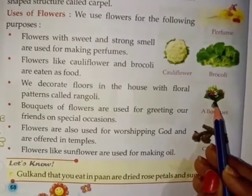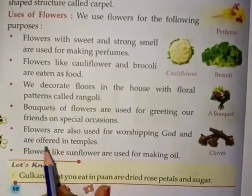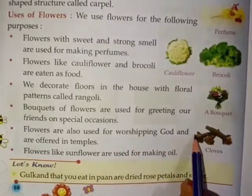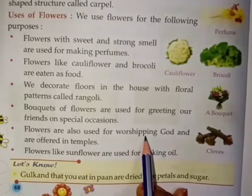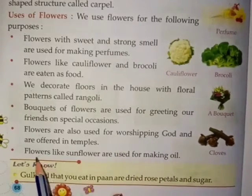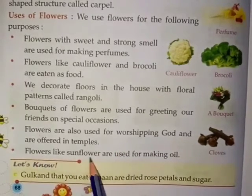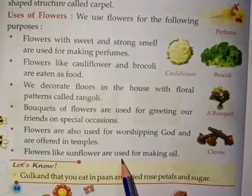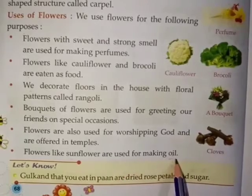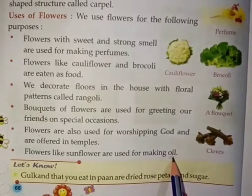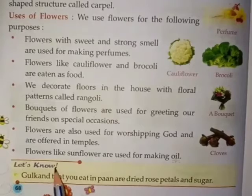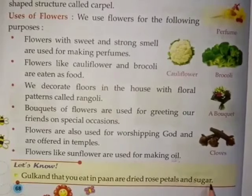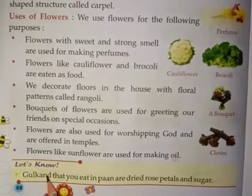To express your feelings on special occasions, flowers are also used for worshipping God and are offered in temples. Flowers like sunflowers are used for making oil. Dried rose petals and sugar are used to make gulkand, a sweet paste used in paan.